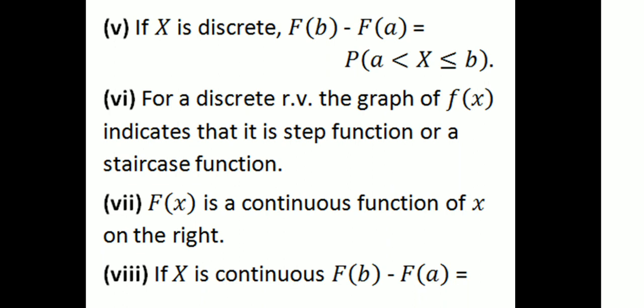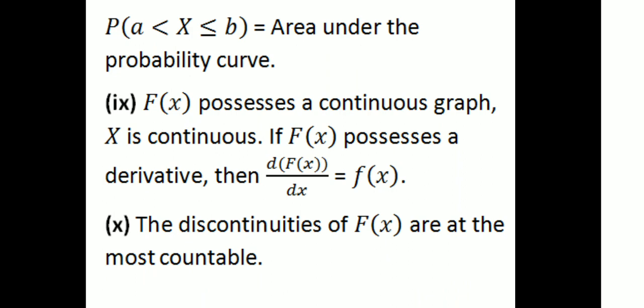For a discrete random variable, the graph of the probability distribution function is a step function. Sixth, F(x) is a continuous function on the right. If x is continuous, F(b) − F(a) = P(a < X ≤ b), which is the area under the probability curve. Seventh, if x is continuous, F(x) possesses a continuous graph. Eighth, if F(x) possesses a derivative, then d/dx of F(x) = f(x).